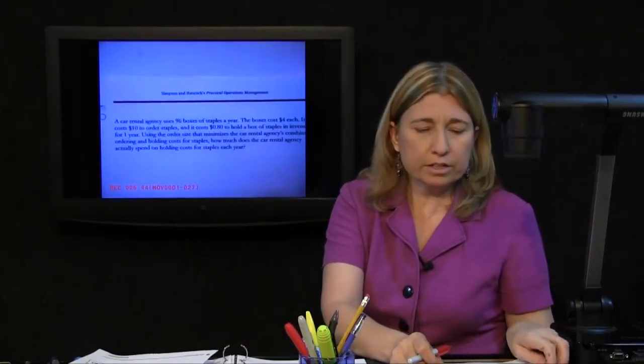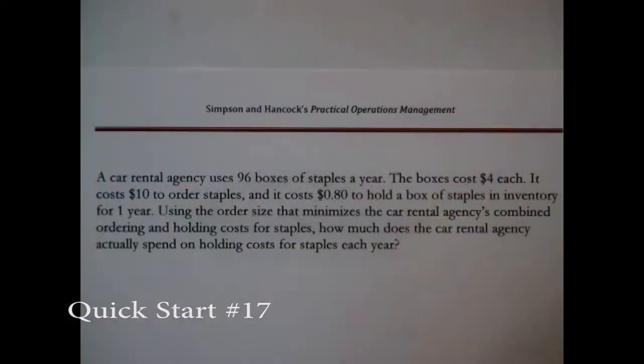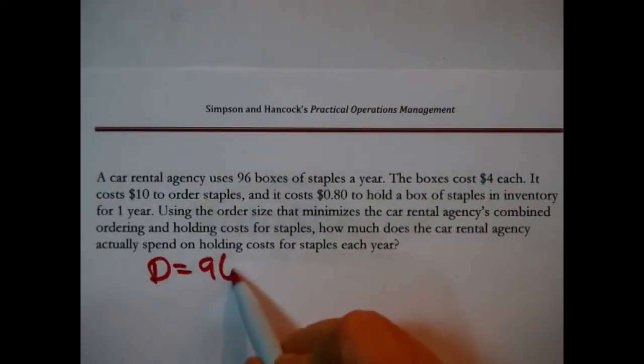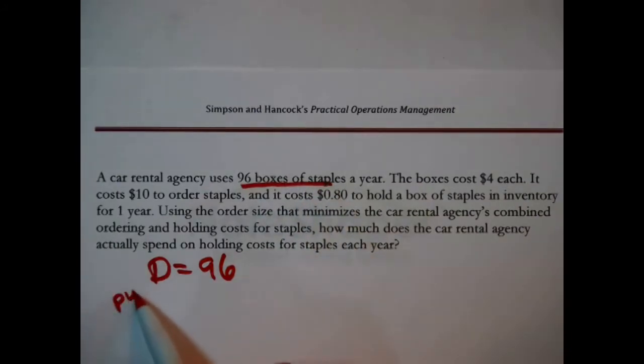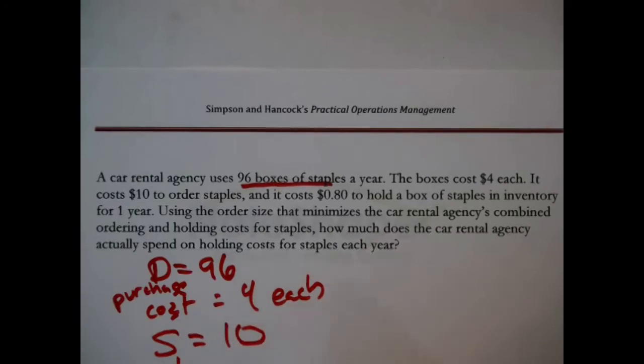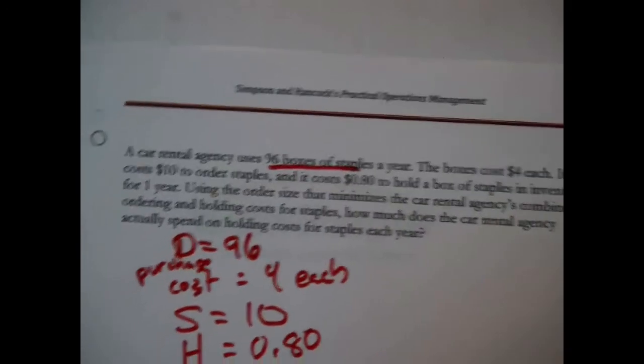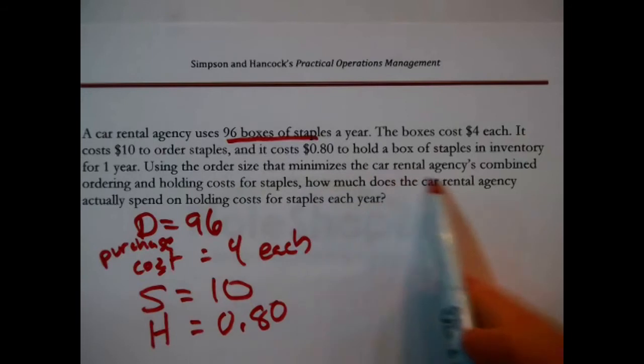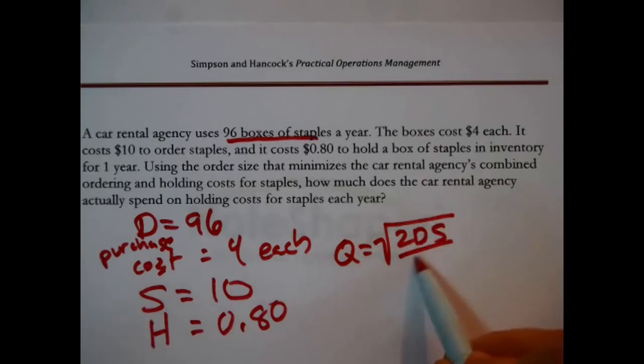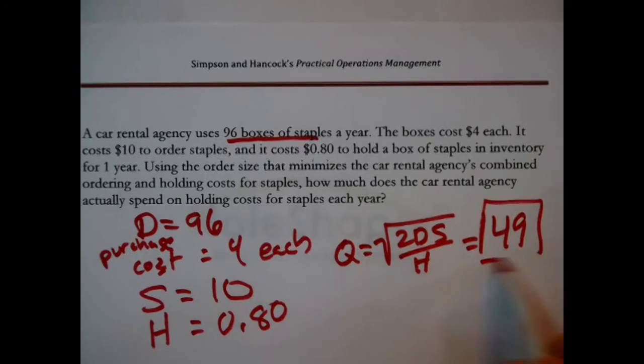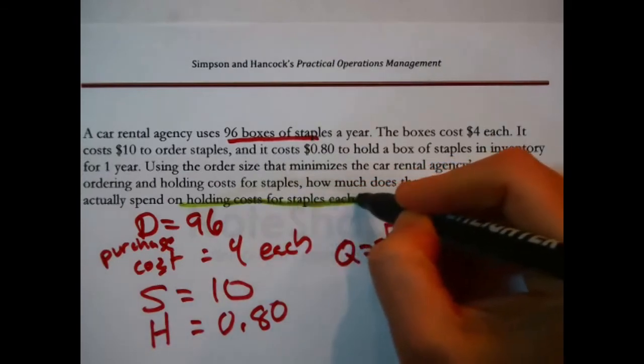The next question is about that same car rental agency. They use 96 boxes a year. The boxes, well maybe we'll use it this time, purchase cost $4 each. Ordering cost is still $10, holding cost is still $0.80. Using the order size that minimizes the company's combined ordering and holding costs - so using the order size that's the result of 2 times D times S divided by H, which we did figure out with rounding was 49 - what's the question? How much does the rental car agency actually spend on holding costs for staples each year?